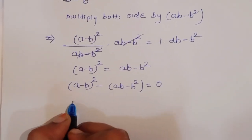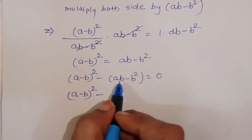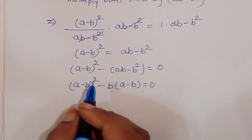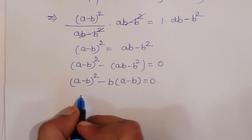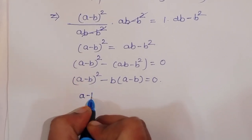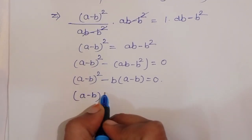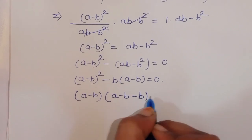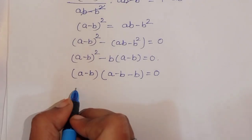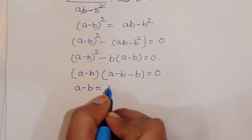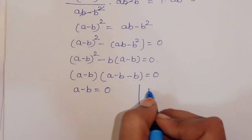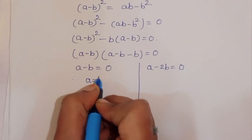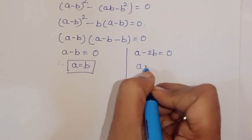Now, bringing ab minus b squared to the left side: a minus b whole squared minus ab minus b squared equals 0. We can write a minus b whole squared minus b times a minus b equals 0. Taking a minus b as common, we get a minus b times a minus b minus b equals 0, which is a minus b times a minus 2b equals 0.